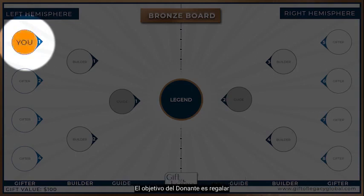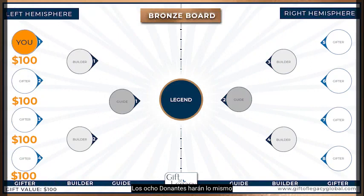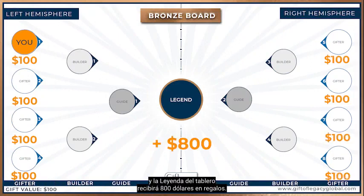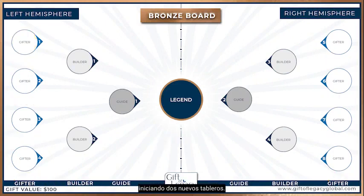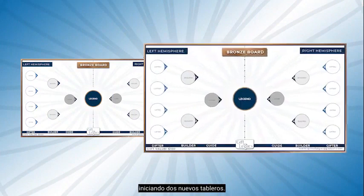You enter a board as a gifter. The purpose of the gifter is to gift an unconditional $100 to the legend of the board. All eight gifters will do this, and the legend of the board will receive $800 in gifts. This will complete the board and split the left and right hemispheres, starting two new boards.